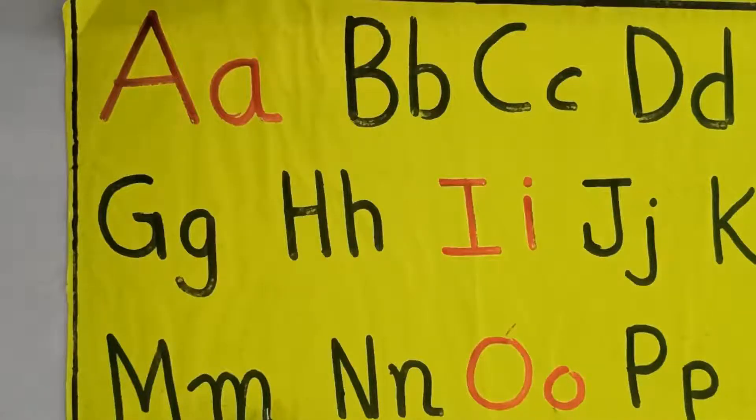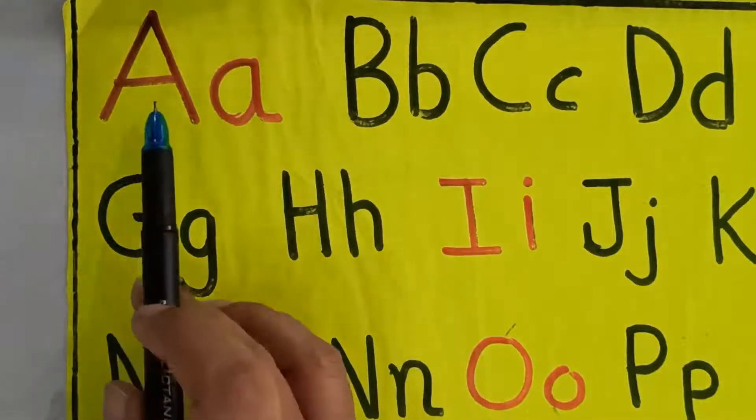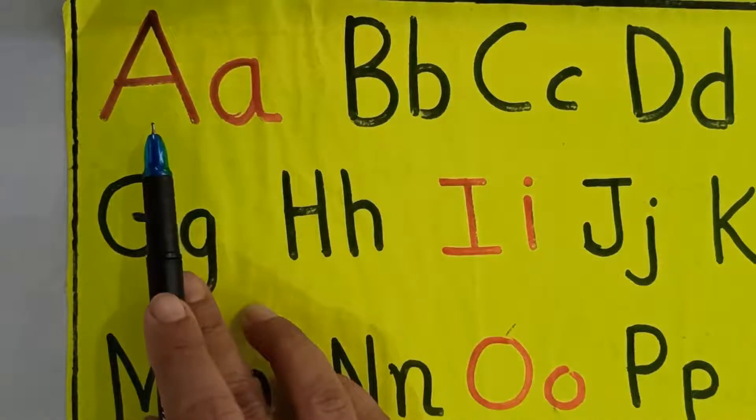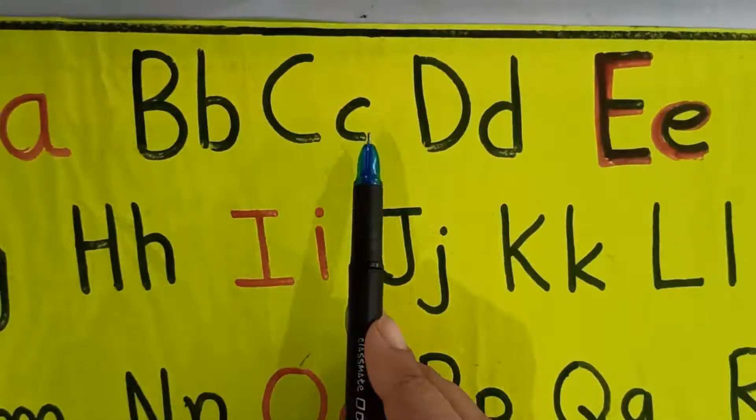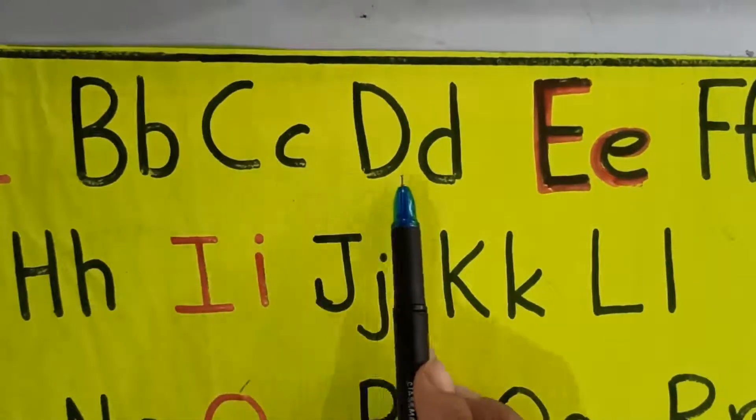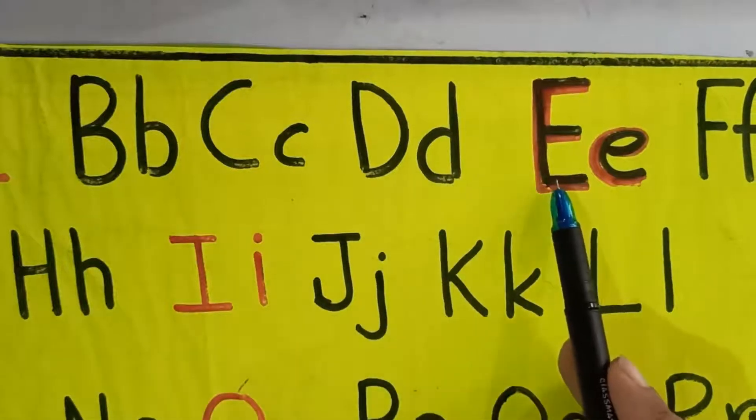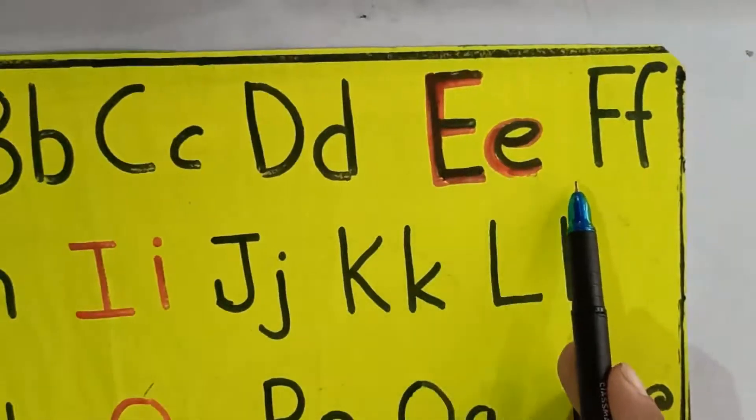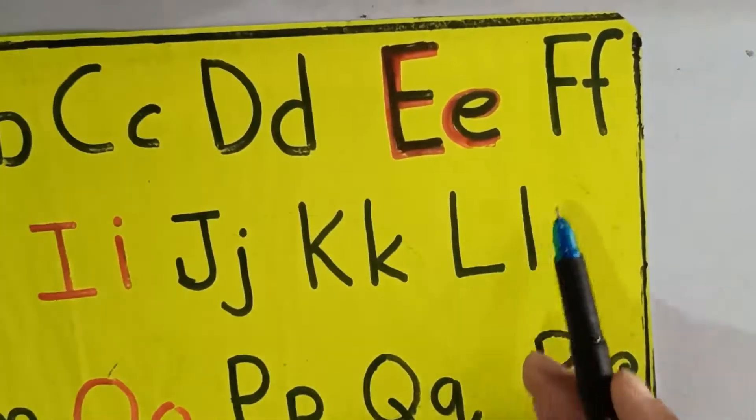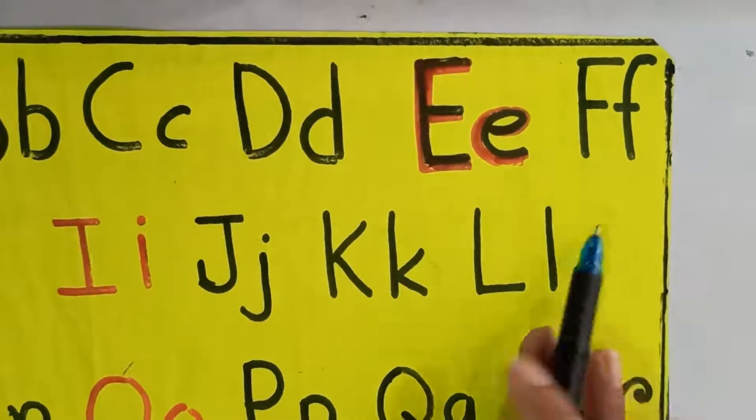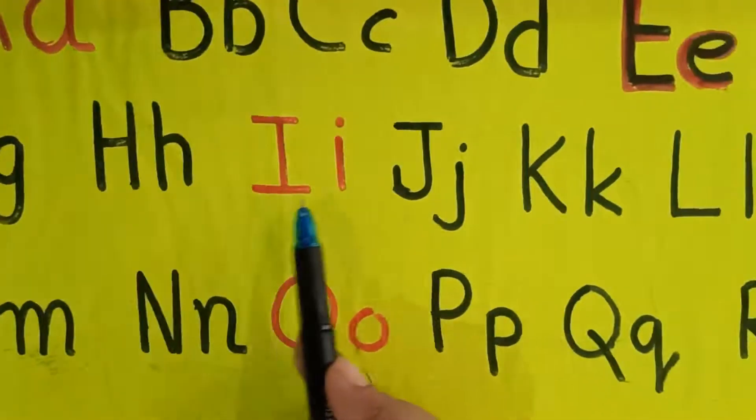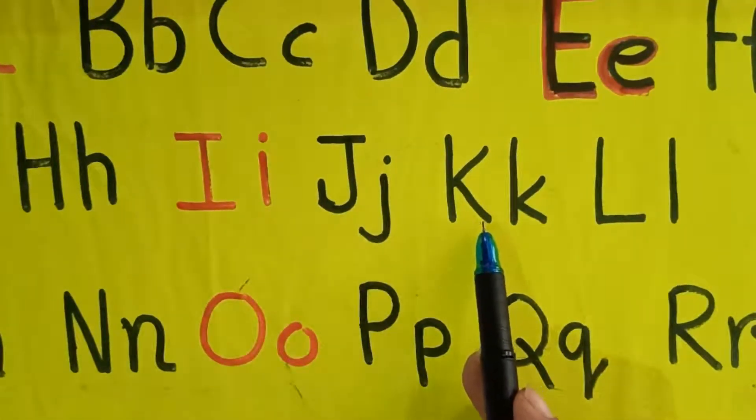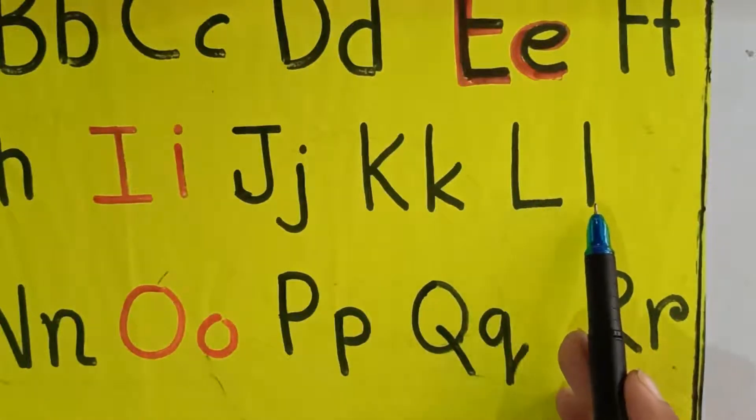Then I am going to tell you about the capital and small letters. And with that I will teach you how to write both capital and small. Now all of you read with me. A, a. B, b, capital small. Then C, c, capital small. D, d. E, e, capital small. Then F, f. Then G, g. H, h. I, i. J, j. K, k. L, l, both capital and small letters.